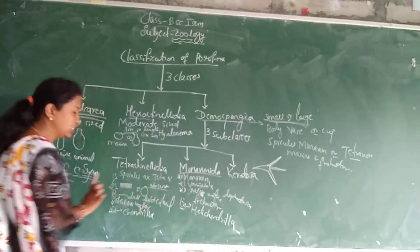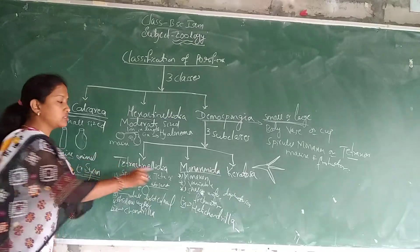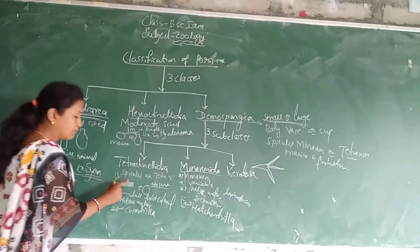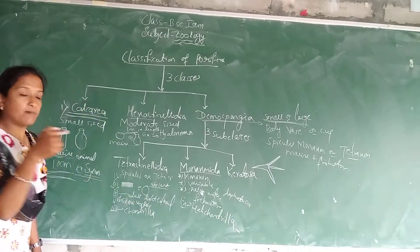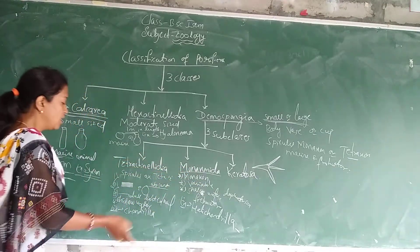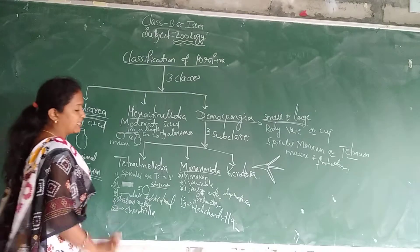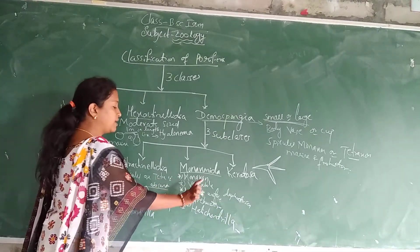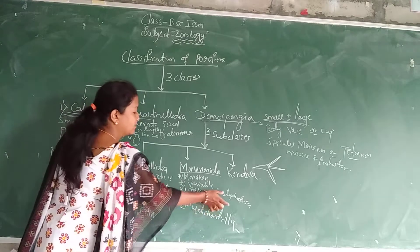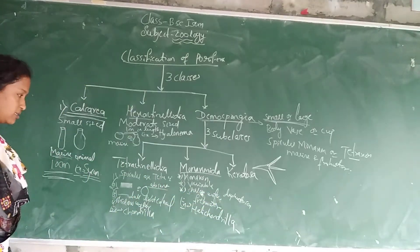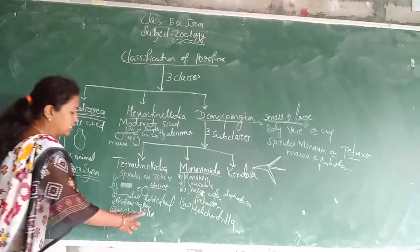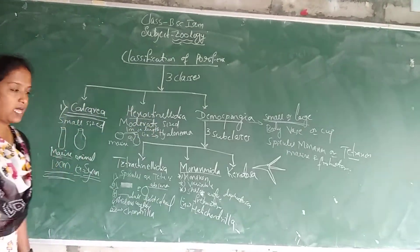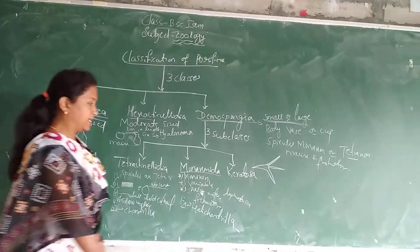There is a slight difference between these two subclasses: Tetractinellida has four spicules, while Monaxonida has only one spicule. Tetractinellida body is flattened or round, while Monaxonida body is variable. Tetractinellida is only shallow water, but Monaxonida includes shallow, deep sea, and fresh water. Example of Tetractinellida is Chondrilla; example of Monaxonida is Haliclona.